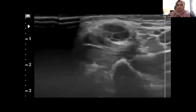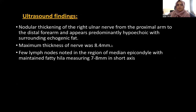This is again showing the ulnar nerve in cross-section. Our ultrasound findings showed marked thickening of the right ulnar nerve from the proximal arm to the distal forearm, which appears predominantly hypoechoic with surrounding echogenic fat. Maximum thickness of the nerve was 8.4 mm, and few lymph nodes were also noted in the region of the medial epicondyle with maintained fatty hilum measuring 7 to 8 mm in short axis.